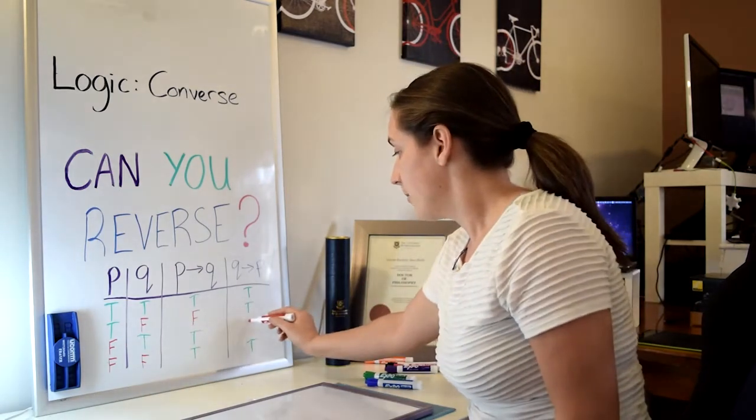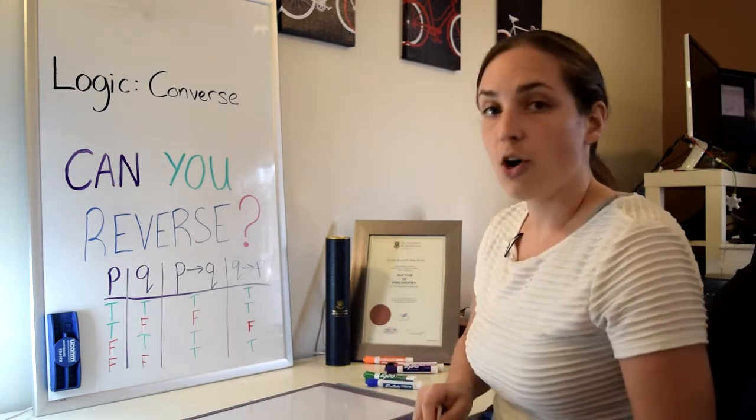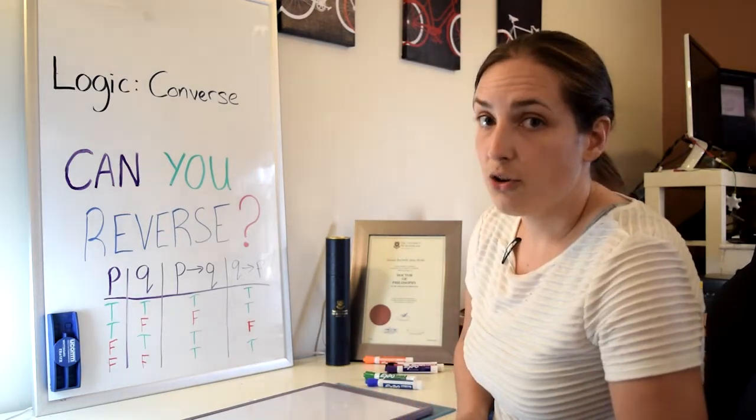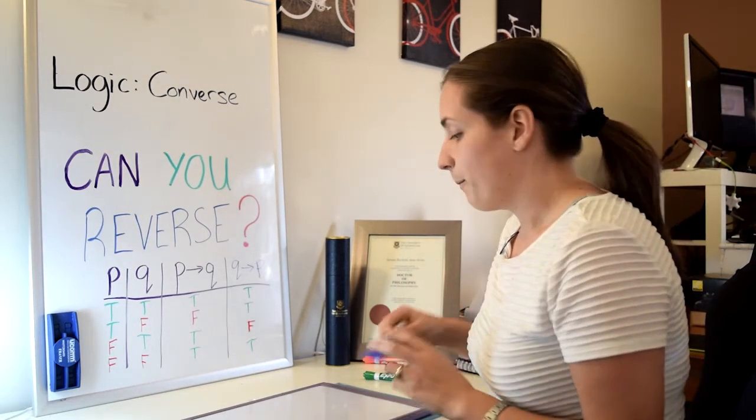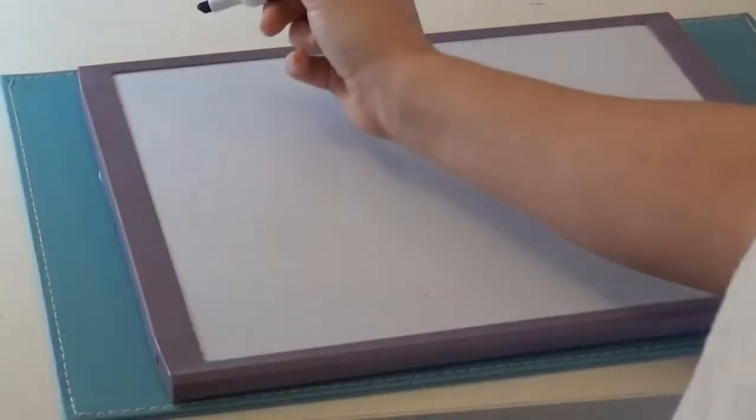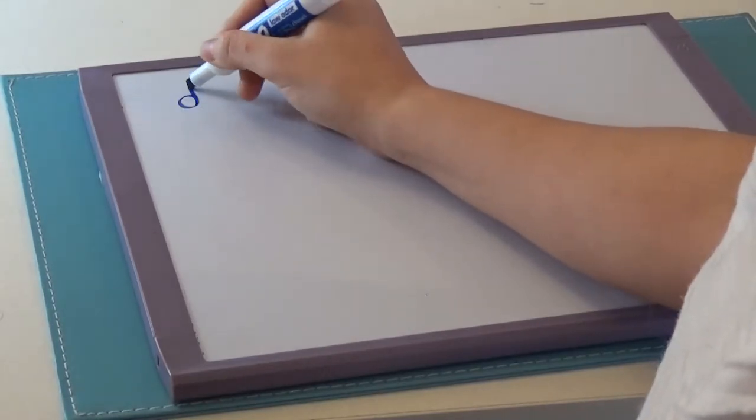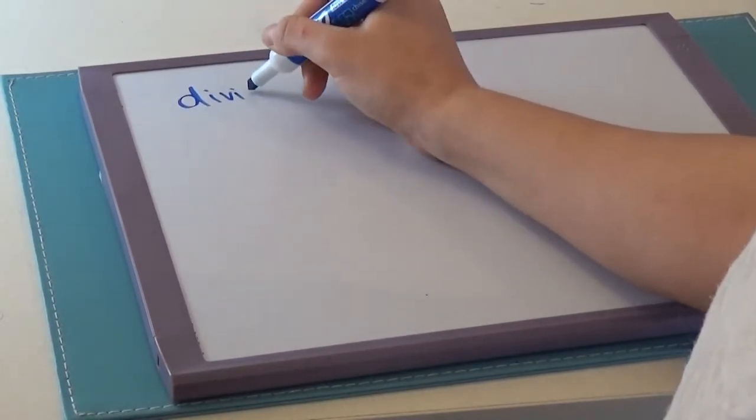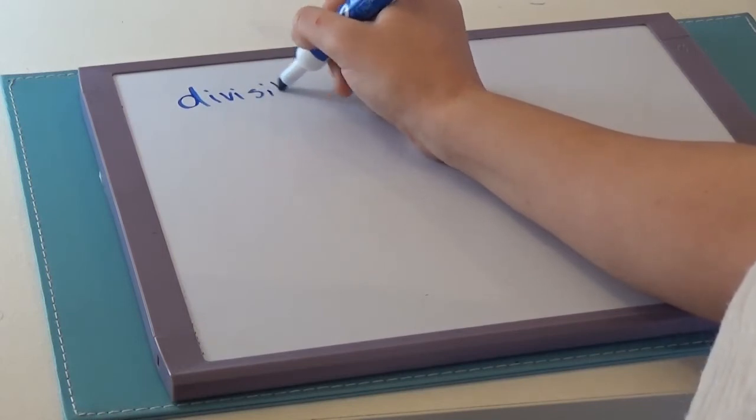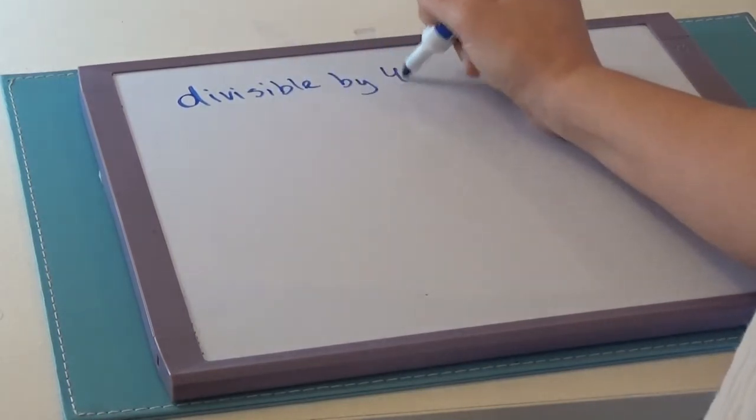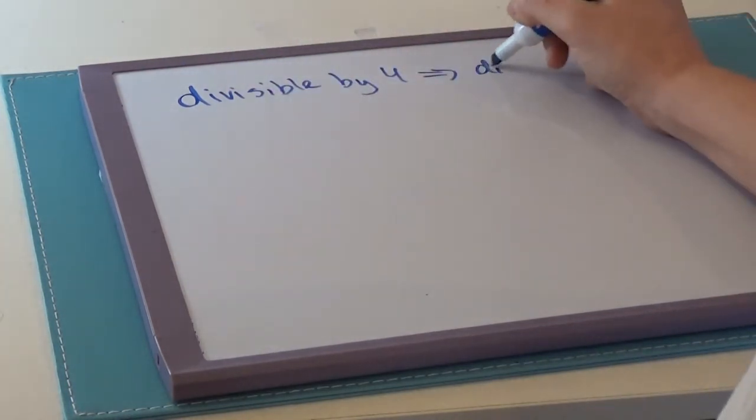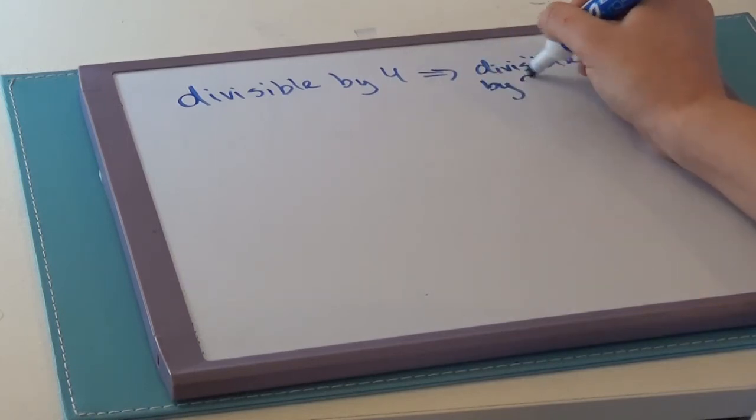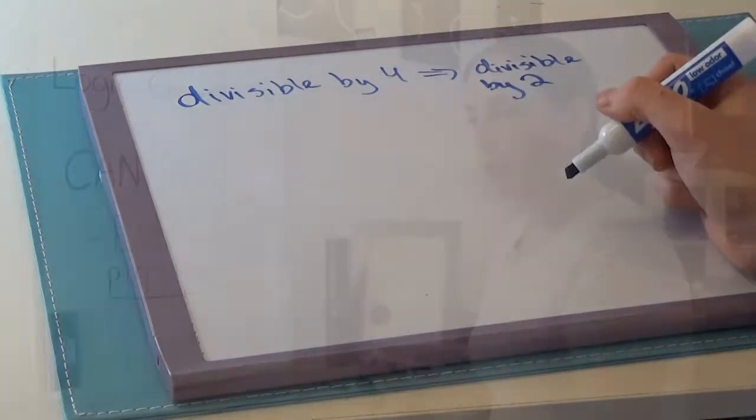So if P then Q is a very different statement than if Q then P. For example, if you think about divisibility by four, you might say, well, if some number is divisible by four, then the number is going to be divisible by two. If it's divisible by four, then divisible by two.